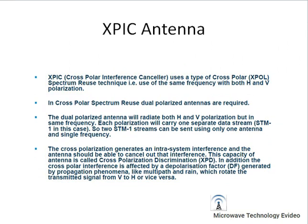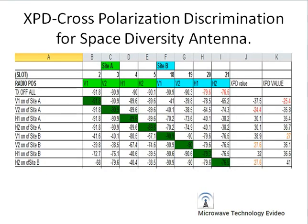In cross polarization spectrum reuse, a dual polarization antenna is required. The dual polarization antenna radiates both horizontal and vertical polarization on the same frequency. Each polarization carries one separate data stream, meaning there are two HTM1 streams. The cross polarization generates intra-system interference, and the antenna should be able to cancel out this interference. This capacity of the antenna is called Cross Polarization Discrimination, or XPD.